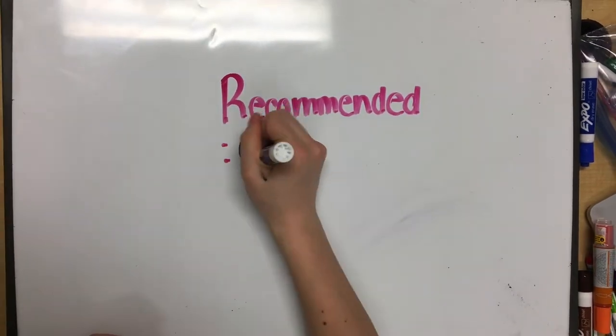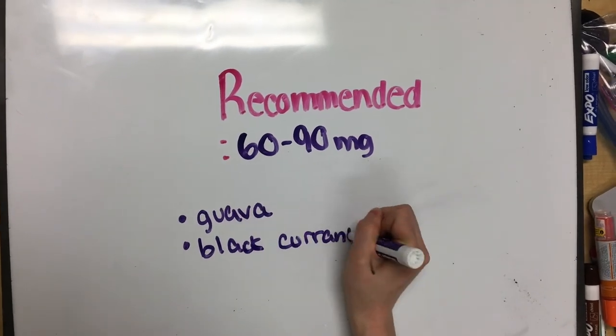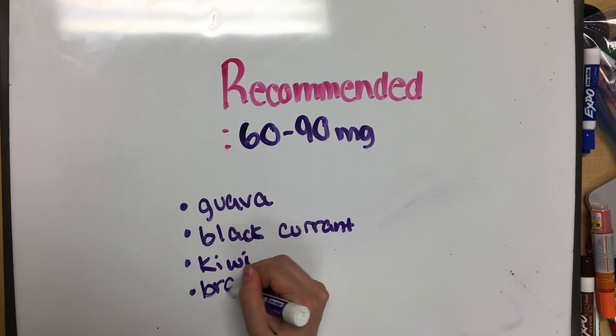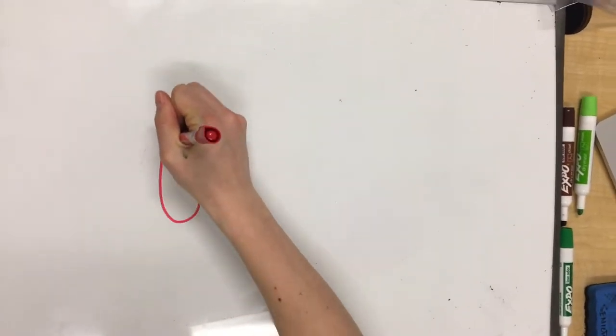The recommended daily amount of vitamin C ranges from 65 to 90 milligrams, which foods such as guava, blackcurrant, peppers, kiwi, and broccoli already have on their own after just eating a few.